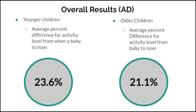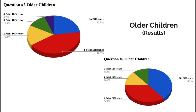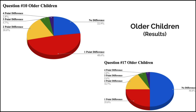For the overall results, the younger children's average percent difference was 23.6%. For older children, the average percent difference was 21.1%. This shows that activity level did remain fairly consistent, as the percentages are low. For older children's specific results, questions 2 and 7 showed the majority had either no difference or a one-point difference in activity level from when a baby to now, showing consistency. Questions 10 and 17 from the older children's data also followed this pattern, with the majority having either no difference or a one-point difference in activity level.